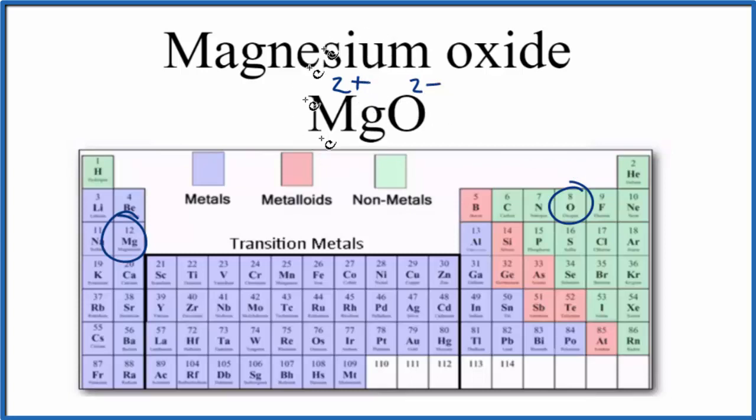So we have the magnesium ion, the positively charged magnesium ion, and the negatively charged oxide ion. Those opposite charges there attract, that forms the ionic bond in magnesium oxide.